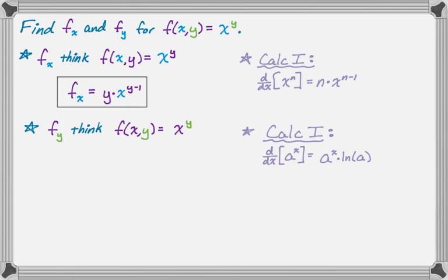And so when I find this derivative, I'm thinking it's a constant raised to a variable power. So the derivative is the original thing, x to the y times the natural log of the base, which is the natural log of the x, and then technically times the derivative of y, but the derivative of y with respect to y is just 1.